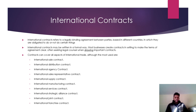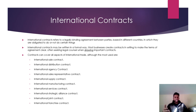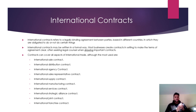Contracts can cover all aspects of international trade. The most commonly used types are: sales contract, distribution contract, agency contract, sales representative contract, supply contract, manufacturing contract, services contract, strategic alliance, and joint venture contract.